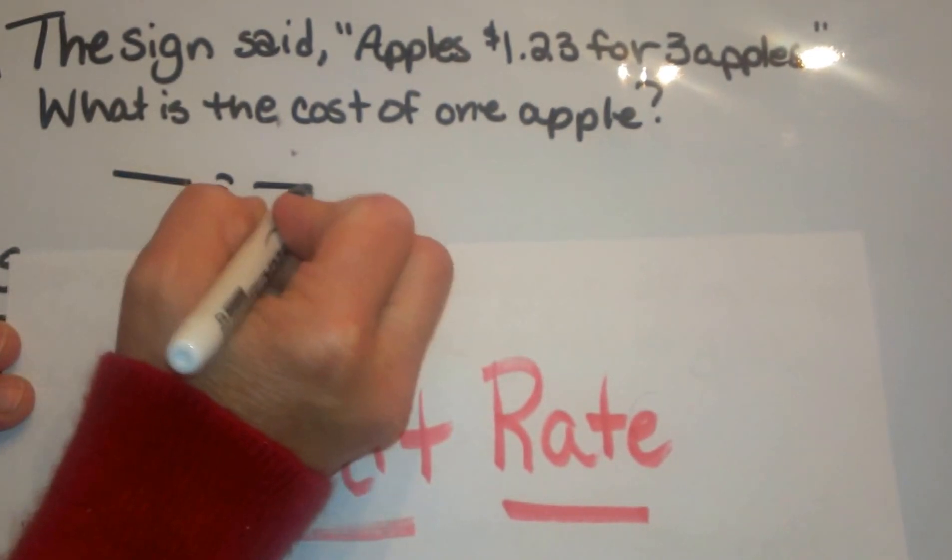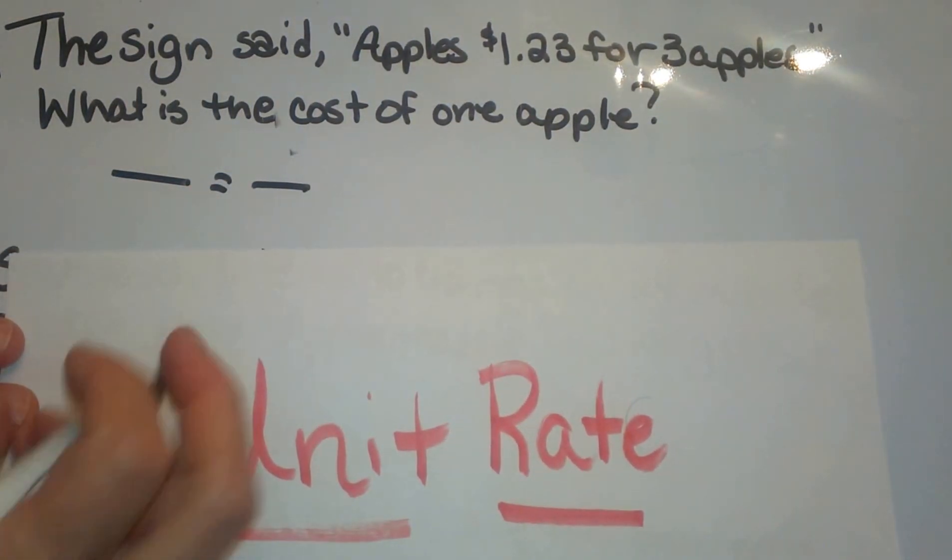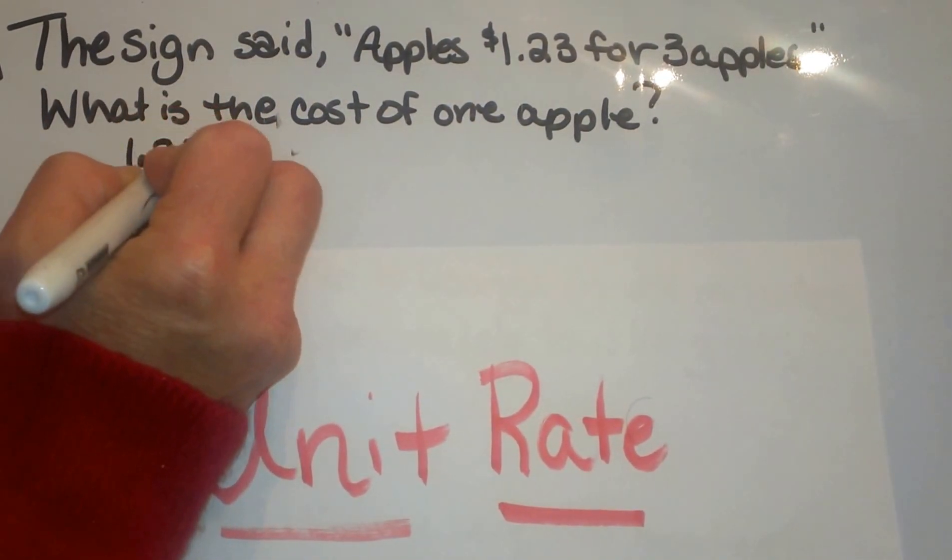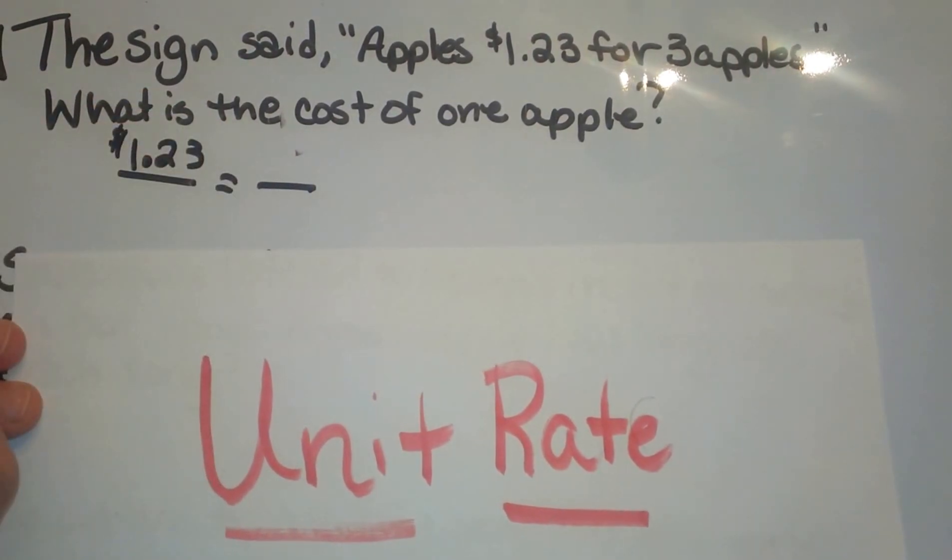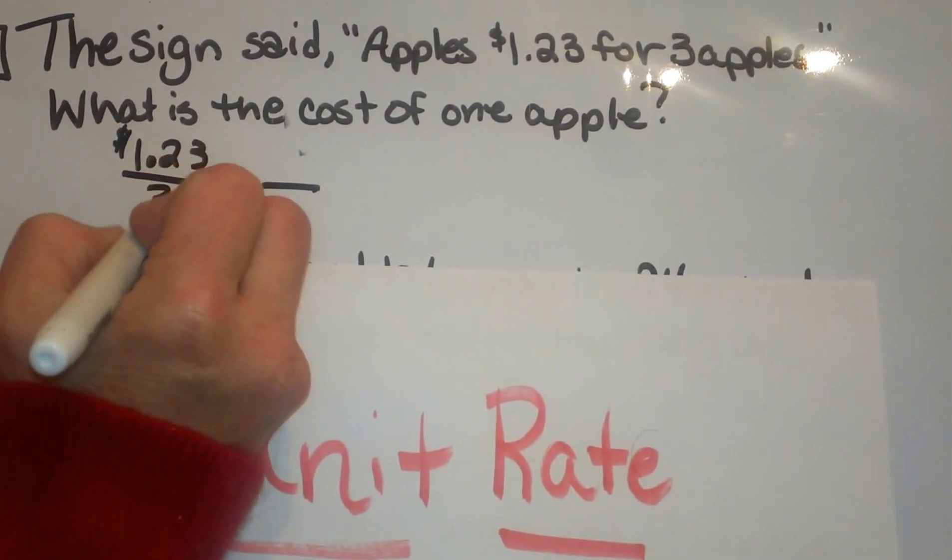A proportion is just two fractions equal to each other. So for $1.23, that is my money on top, I have three apples.